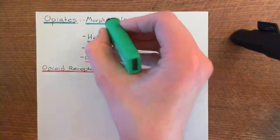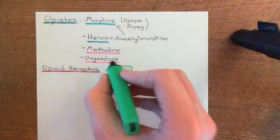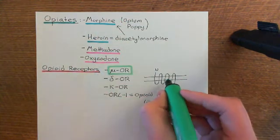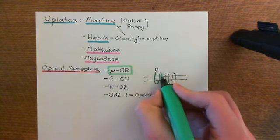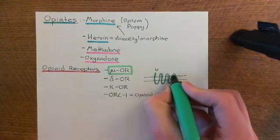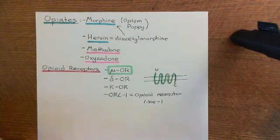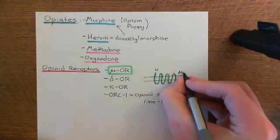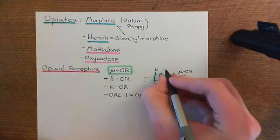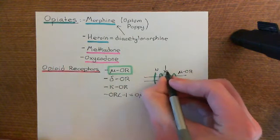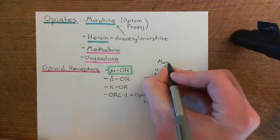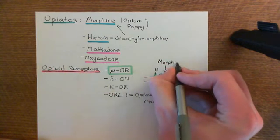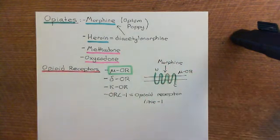All of these drugs — morphine, methadone, oxycodone — are all going to activate the mu opioid receptor. They all bind to the mu opioid receptor and activate it. So let's say this is our mu opioid receptor and our morphine here is going to bind to the mu opioid receptor and activate it — and this is how it exerts its effect.